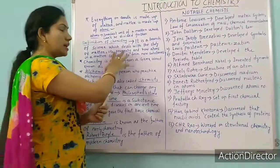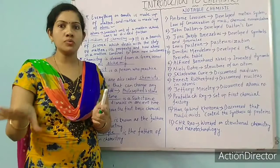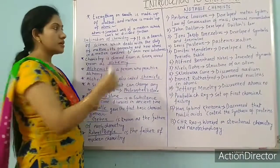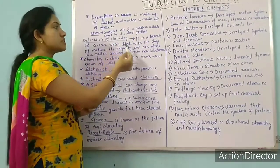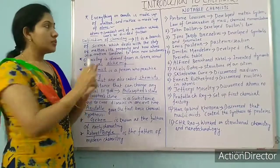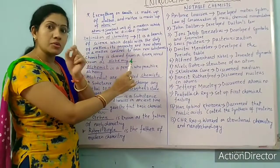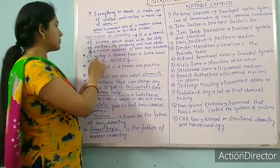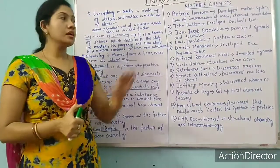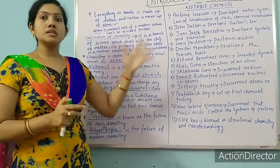Now we can define chemistry. Here I have given a simple definition. If you are finding difficulty from your book's definition, don't go for that — just have a look at this definition. Chemistry is a branch of science which deals with the study of matter. Its property means the property of matter, and how atoms in a matter combine to form a new substance — this is called chemistry.